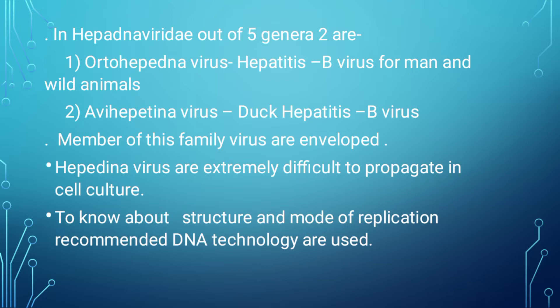In Hepatitis B, out of 5 genera, 2 are Orthohepadnavirus for man and wild animals. Every member of this family, viruses are enveloped. Hepatitis B are extremely difficult to propagate in cell culture. To understand the structure and mode of replication, recombinant DNA technology is used.